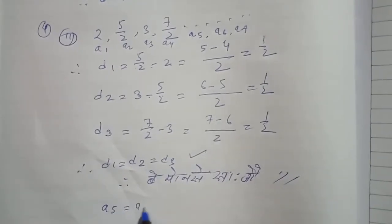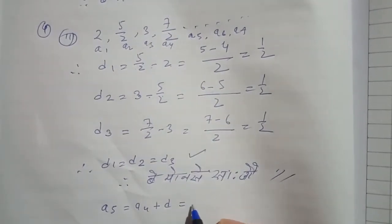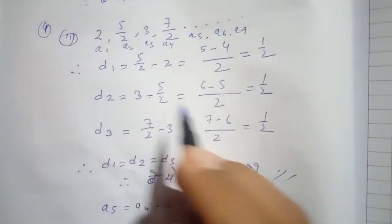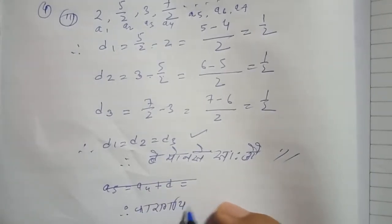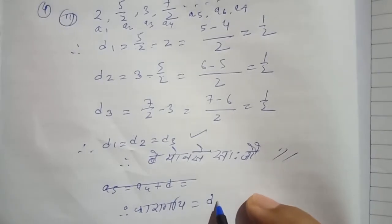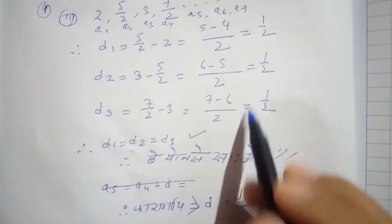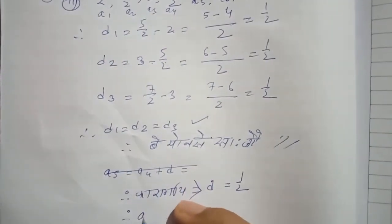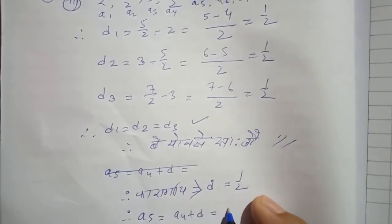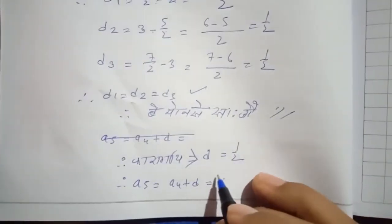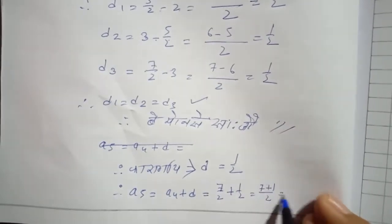A5 equals A4 plus D. This is the formula. The common difference is 1 by 2. Therefore A5 equal to A4 plus D. A4 is 7 by 2 plus 1 by 2 equal to 7 plus 1 by 2 equal to 8 by 2 equal to 4.